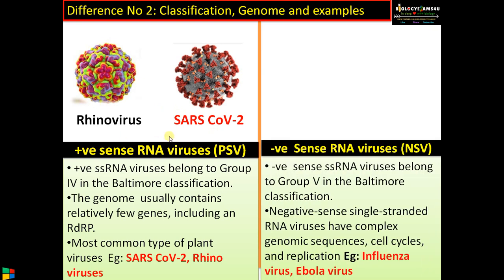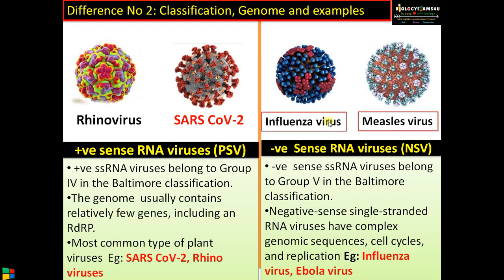Whereas negative sense RNA viruses belong to Group 5 in the Baltimore classification system. These viruses have complex genomic sequences, cell cycles, replication, and modes of replication. Examples include influenza virus, measles virus, etc.